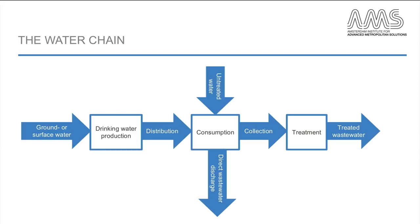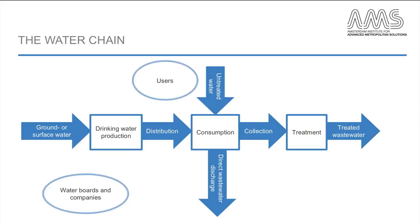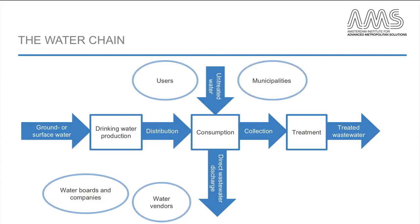But this is not the whole story. A water chain is only functioning as it is used, managed and modified by many stakeholders along the chain, including users, water boards and water companies, water vendors, municipalities and faecal sludge managers.